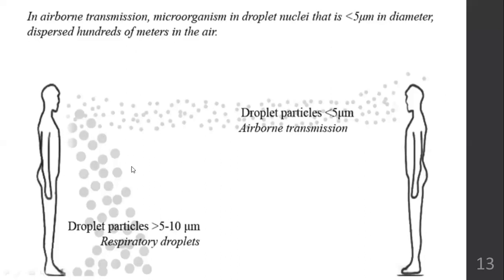For droplet infections, the size of the microbe is bigger than 5 micrometers, so they fall down. When microbes are less than 5 micrometers, they are very lightweight and can travel through air currents over a longer distance.